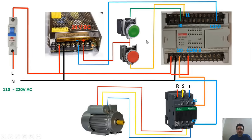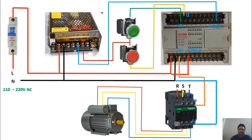The idea is that when we press the start button, the motor turns on and begins to operate, and when we press the stop button, the motor stops running. For this, we need a very simple program. We'll go into the XG5000 software environment and write the program together. After we've written the program, we'll come back and explain the wiring we've done here.